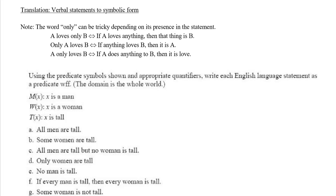In this video we're going to translate a verbal statement to symbolic form using quantifiers such as 'for all' and 'there exists' and predicates. We'll start with something a little troublesome: the word 'only' in a sentence. Here, L(x,y) means x loves y, B(x) means x is B, and A(x) means x is A.